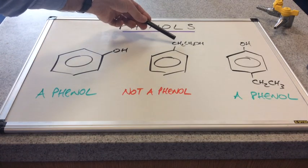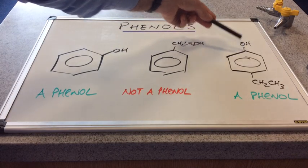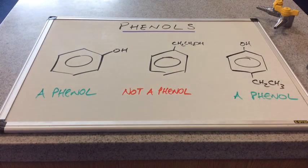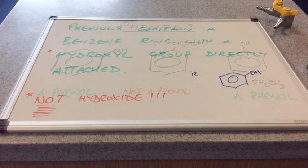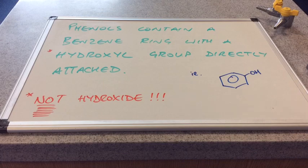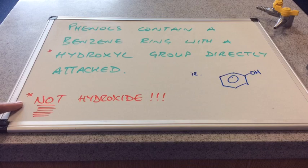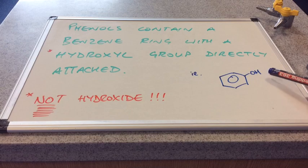And on this one, we've got the hydroxyl group again attached directly to the benzene ring. So it must follow that a phenol must contain a benzene ring with a hydroxyl group directly attached to it. Phenols contain a benzene ring with a hydroxyl group directly attached. And notice I've got that starred. The most common mistake I see from students is they say a hydroxide group directly attached. And that loses them the mark. This is not a hydroxide ion. It's a hydroxyl group.